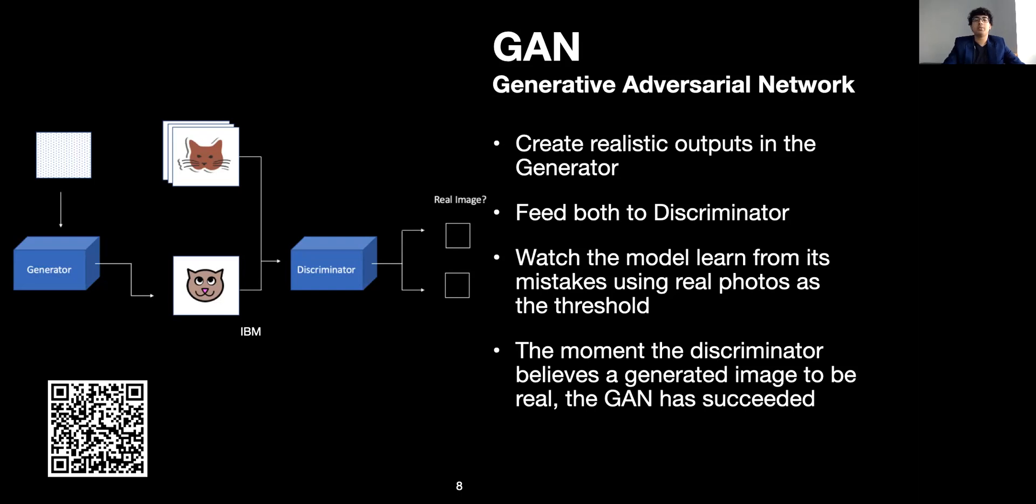The GAN works similarly. You provide an input of real images to the GAN and the generator creates fake inputs. You feed both to the discriminator. The model learns from its mistakes as the discriminator can distinguish between the generated images and the real images. Over time, the generator gets better and better at counterfeiting the real images. And this is when we know the GAN has succeeded in producing an image.